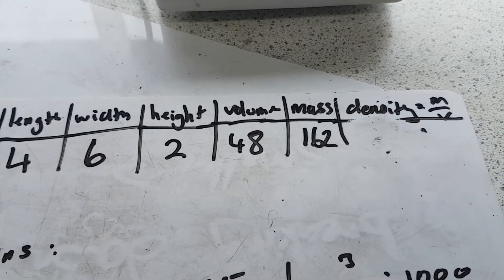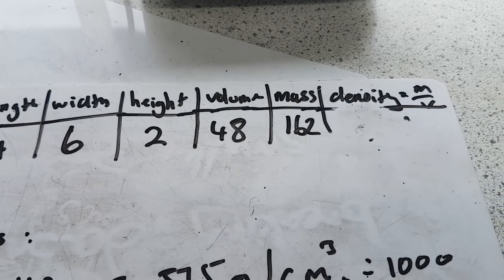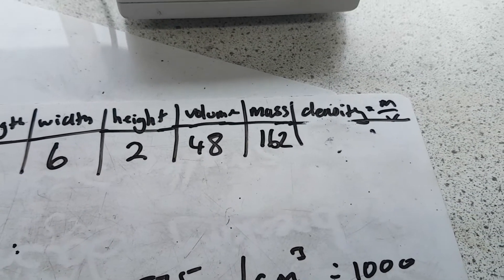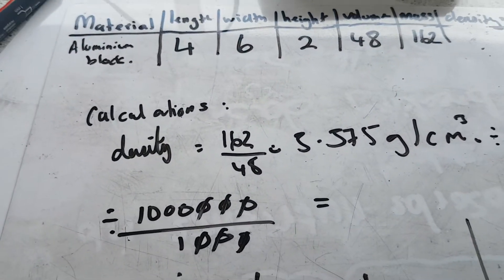My mass, which I got from the weighing balance. And density, I'm going to work out by saying mass divided by volume. Now for this guys, it's important that you show your calculations.